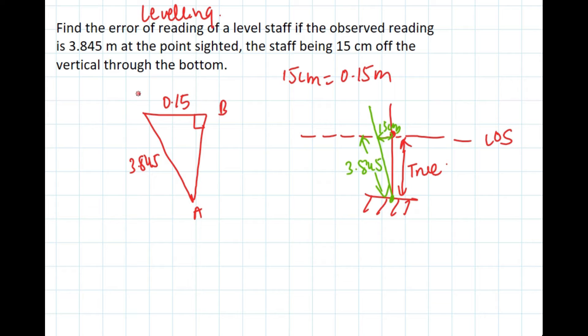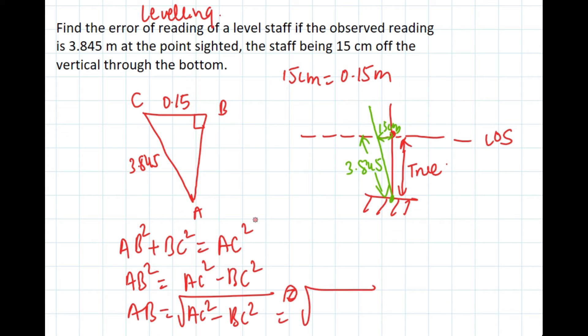If this is A, this is B, and this is C, AB² + BC² = AC². So AB² we don't know, so AC² minus BC² equals AB, which equals √(AC² - BC²).